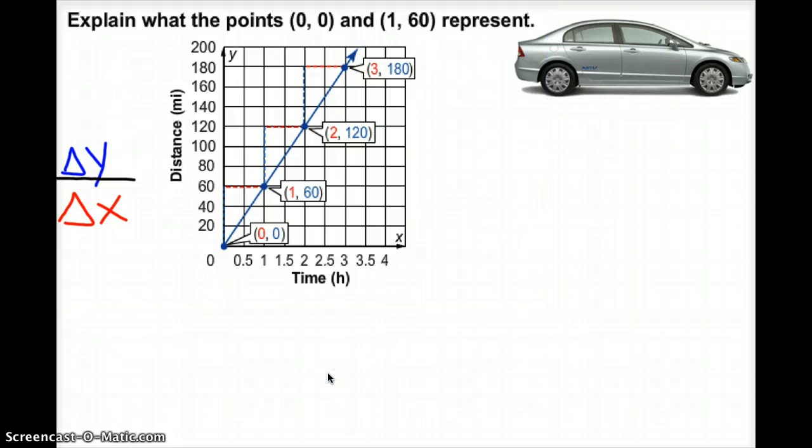From yesterday when we talked about rate of change, we know that the rate of change is the change in y over the change in x. Remember, that little triangle means change. So we're going to look at this graph and find that change in y over the change in x.